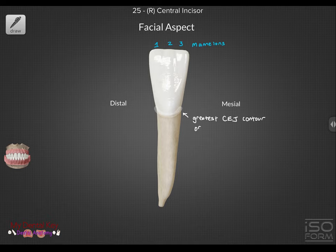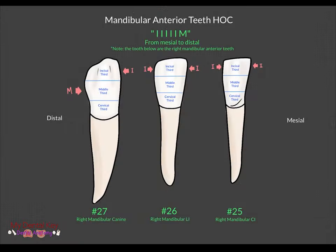It also has the greatest CEJ contour of all mandibular teeth. To figure out the height of contour of the mandibular anterior teeth, you can use a mnemonic I5M, which means that the mesial and distal height of contour on the central incisor, the lateral incisor, and only the mesial aspect of the mandibular canine is in the incisal third.